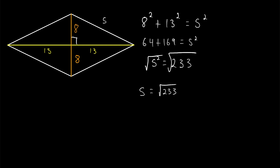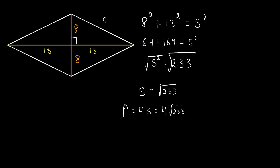Remember, we're trying to find the perimeter, which consists of four sides. So that's four times the side length we just solved for — four times the square root of 233. This cannot be simplified any further, so we can leave our answer in this exact form, or plug it into a calculator to see that this is approximately 61.06.